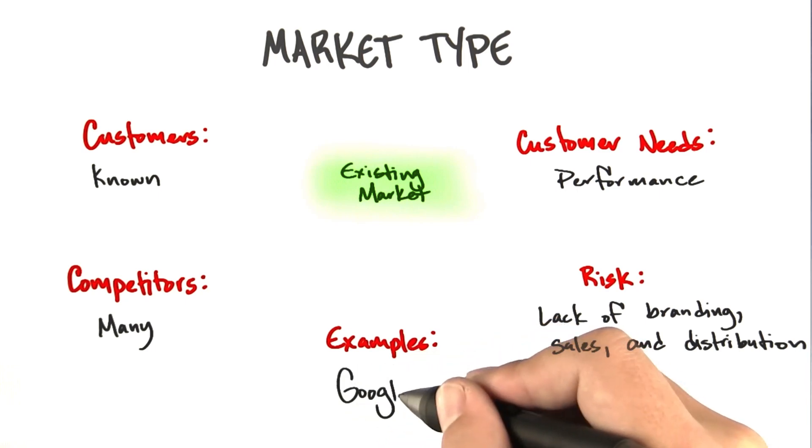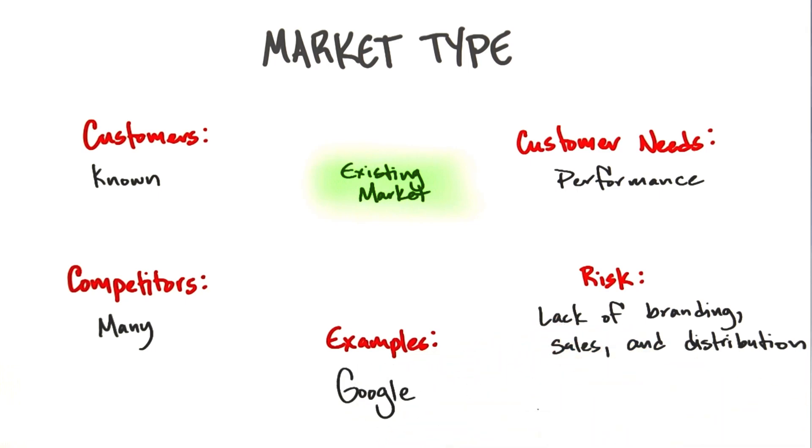Example: Google. It's an existing market. Go ahead and try to enter the search business today — there's a dominant player in search.